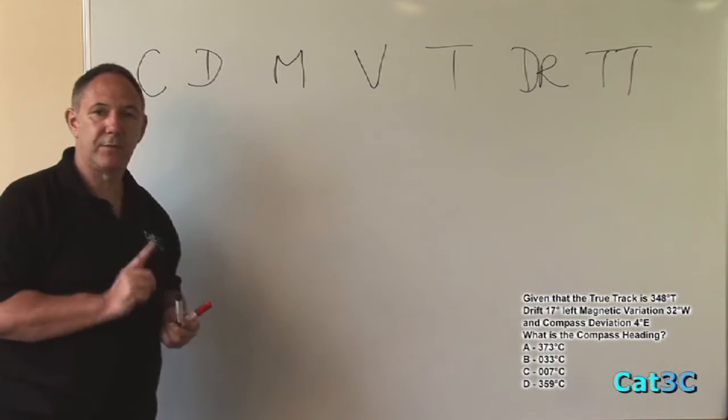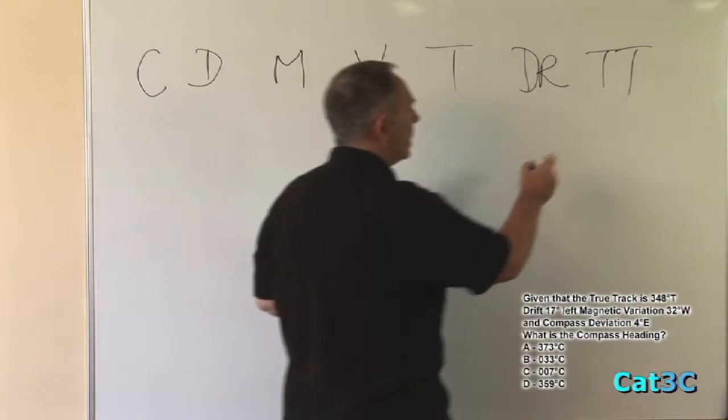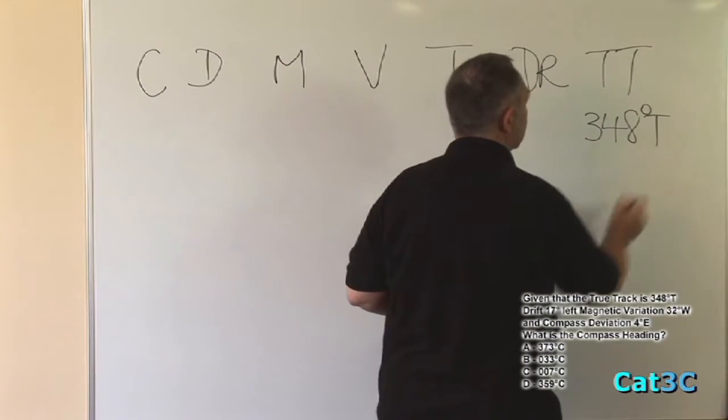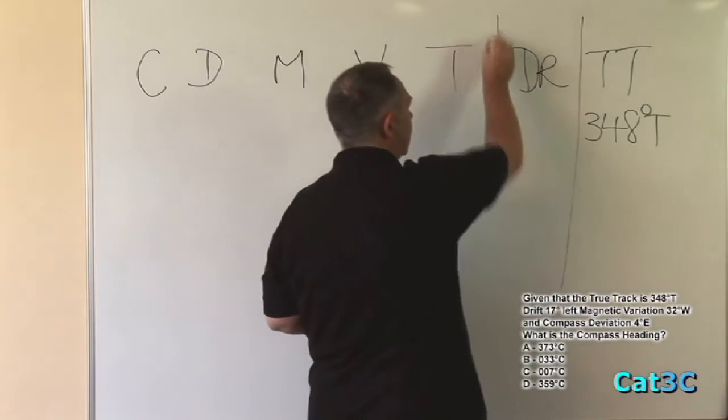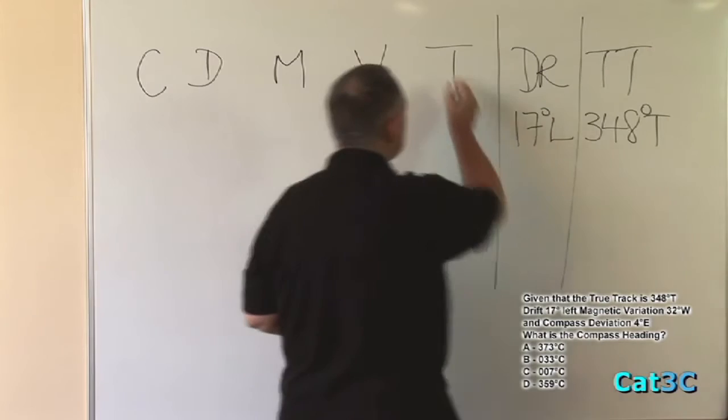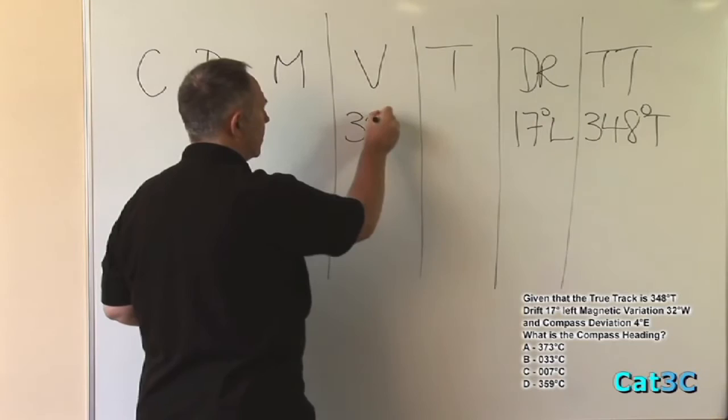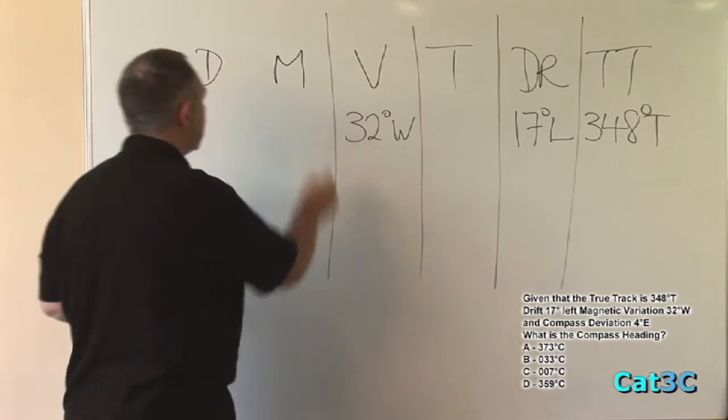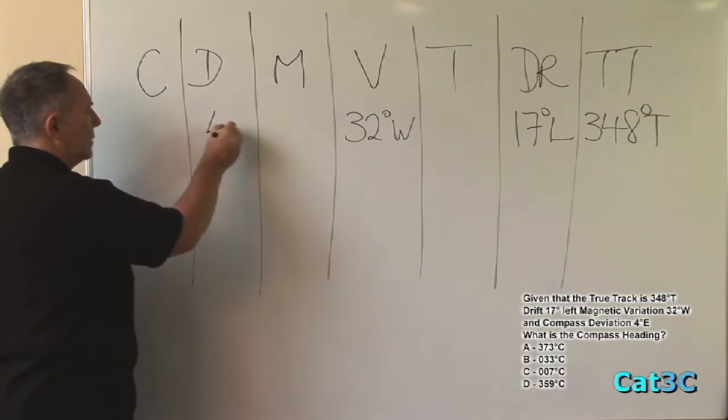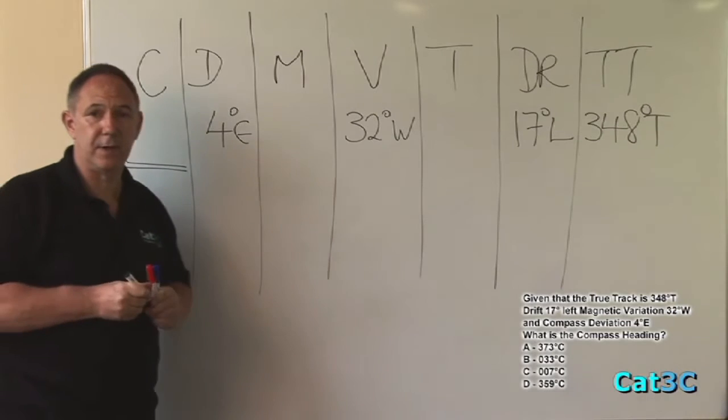Now we've got those, we can fill in the blanks. What do we know? We know that the true track is 348 degrees true. We know that the drift is 17 degrees left. We know that the variation is 32 degrees west. We know that the deviation is 4 degrees east. And the compass heading is what we're trying to find.